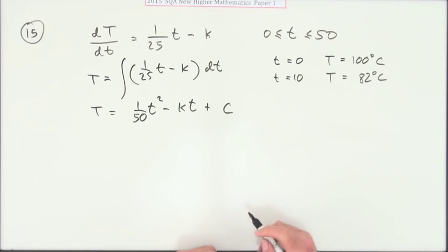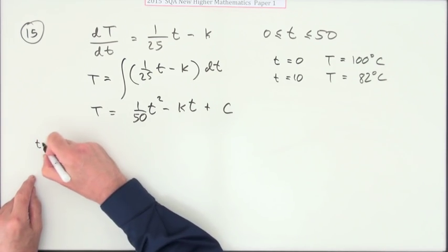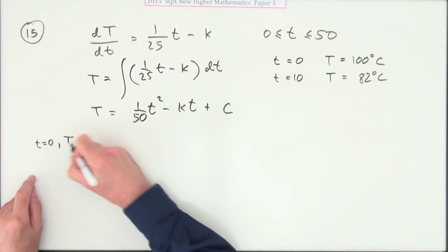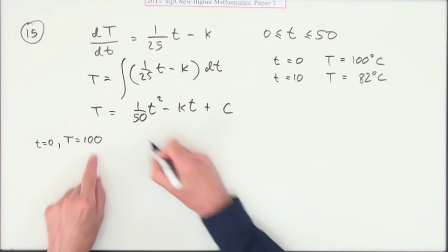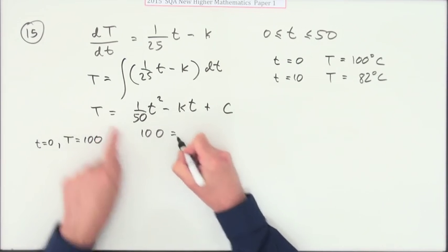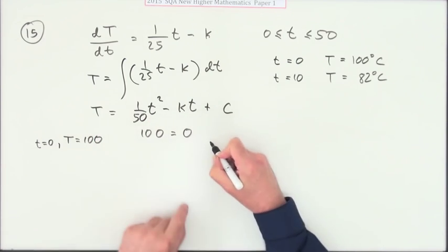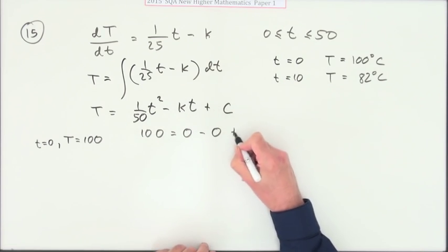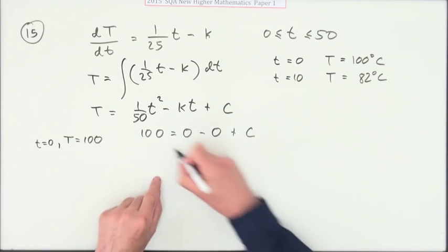The first one was this: if t is zero, then the temperature is 100. So 100 will equal - now if t is zero, that term is zero, and if t is zero, that term is zero, which means that C is 100.